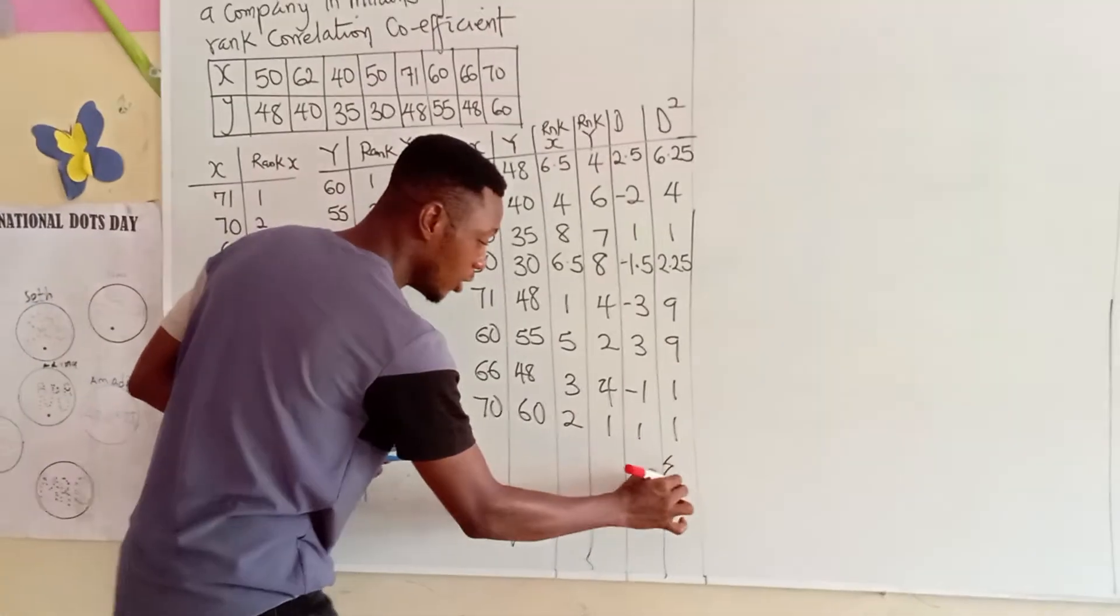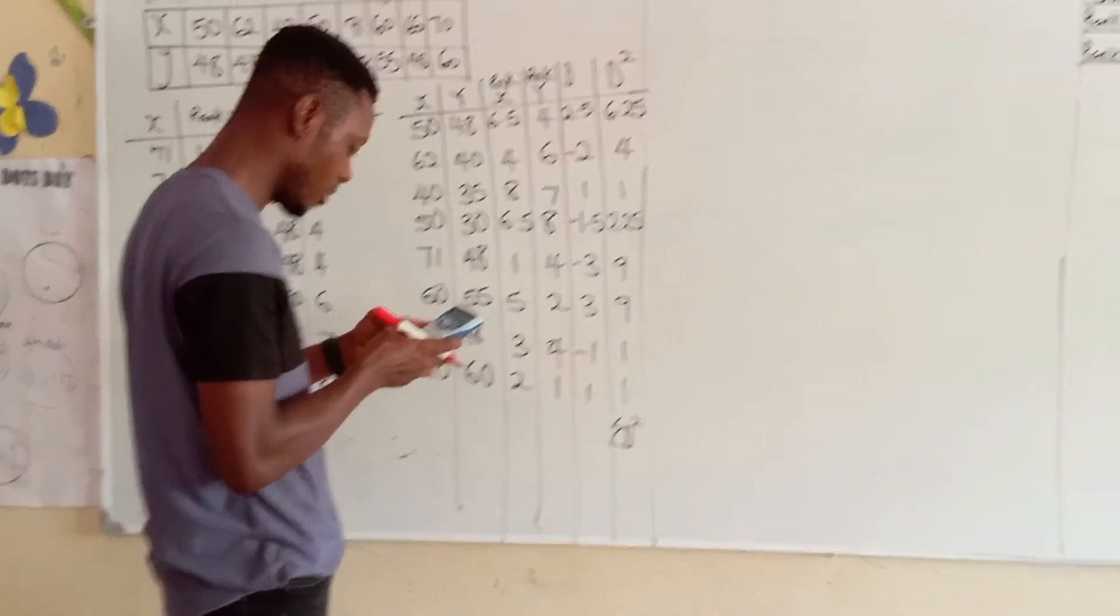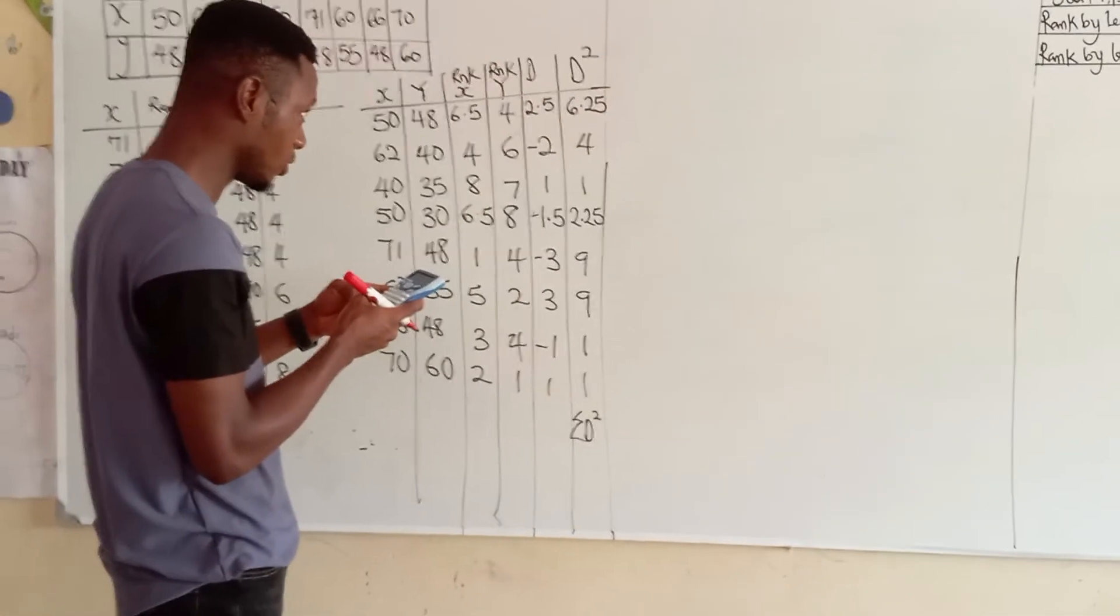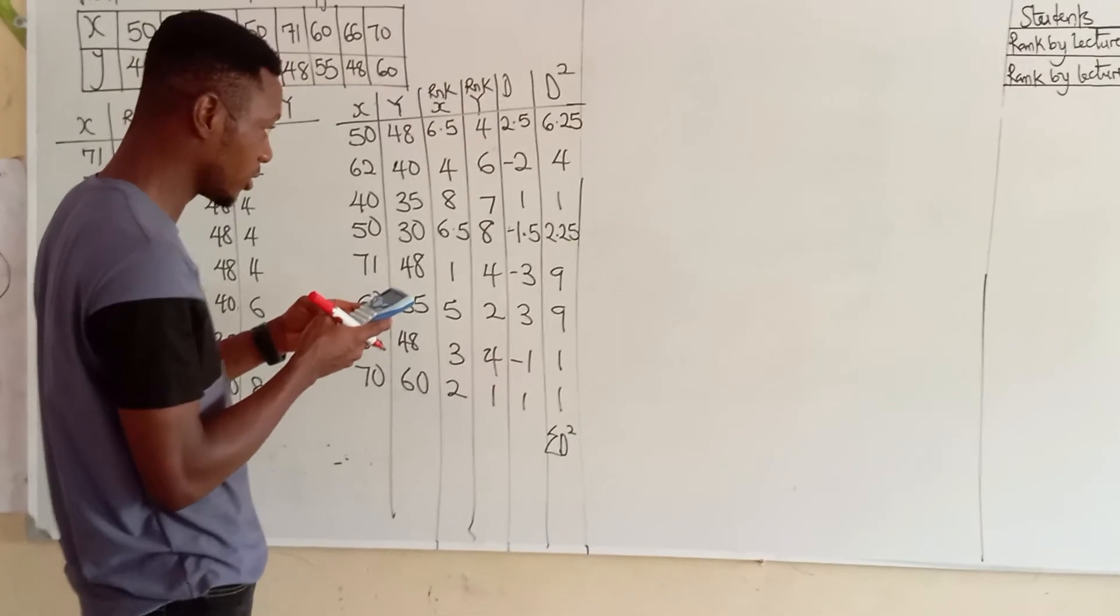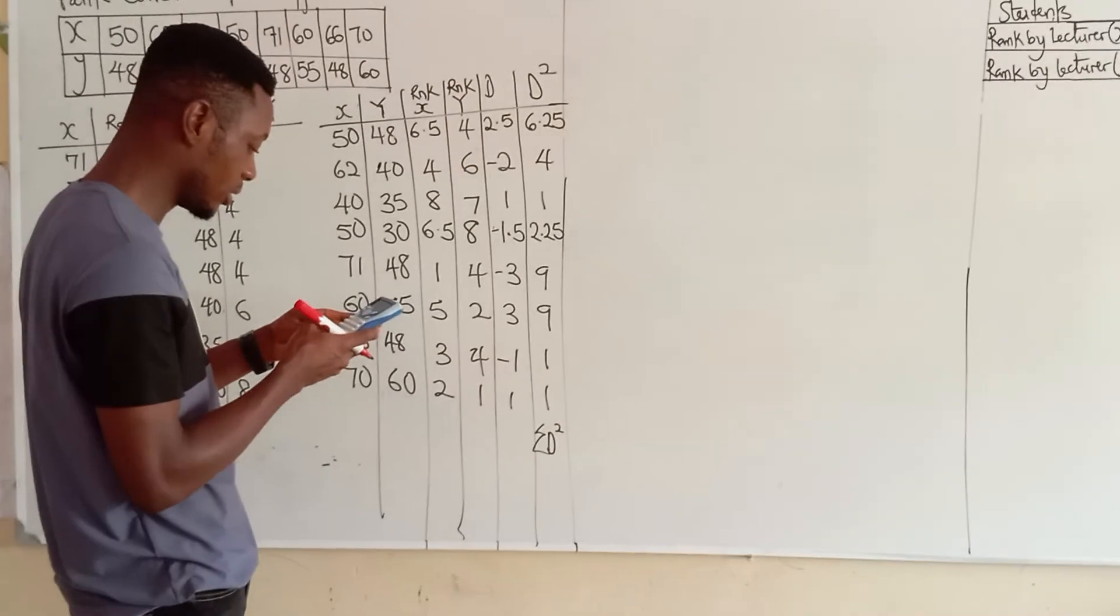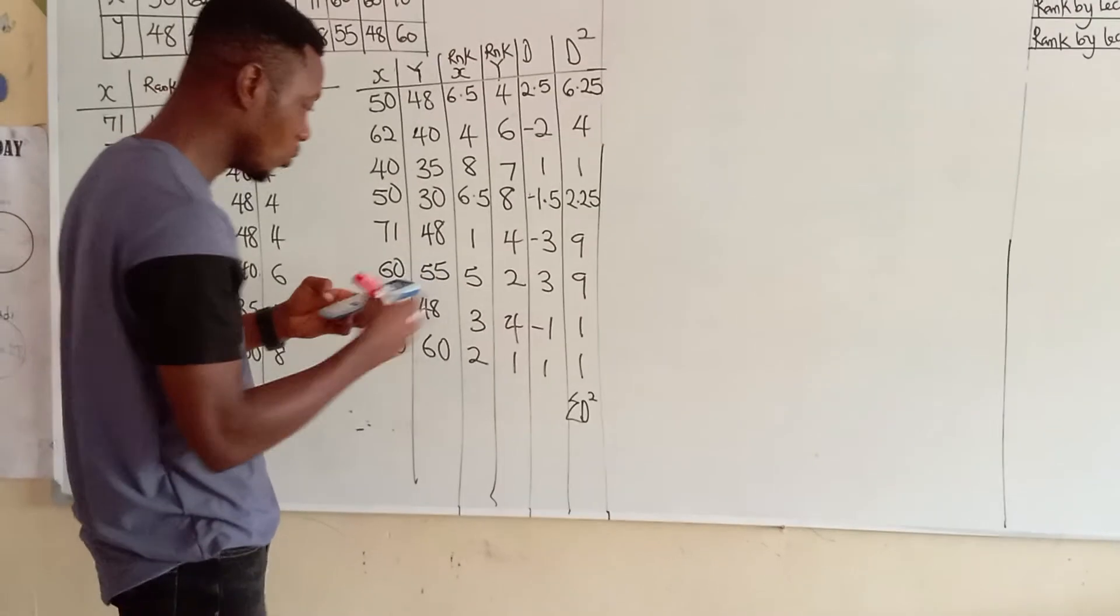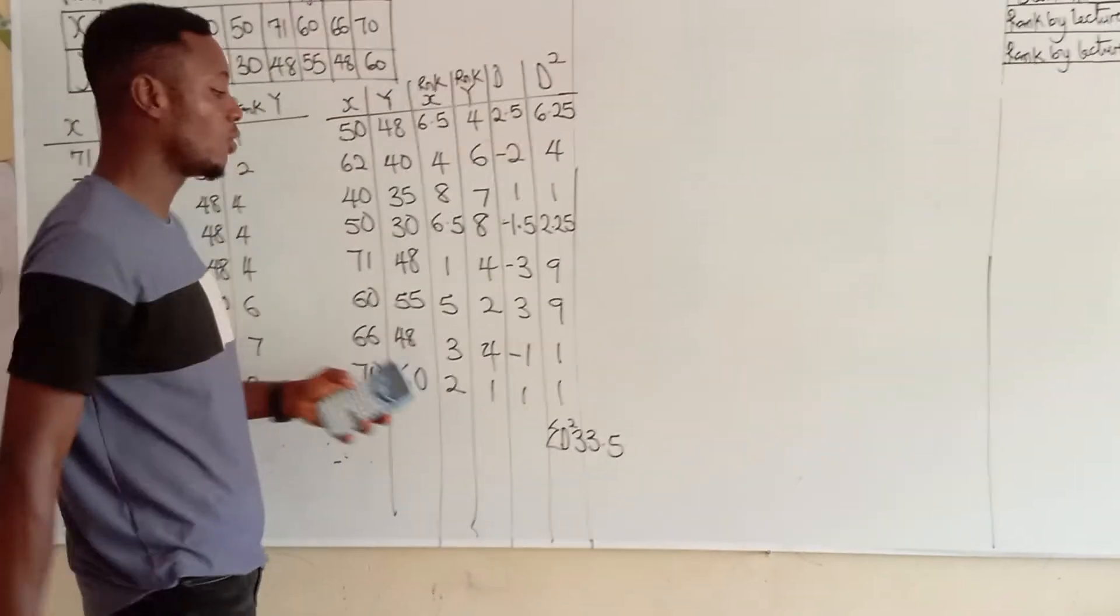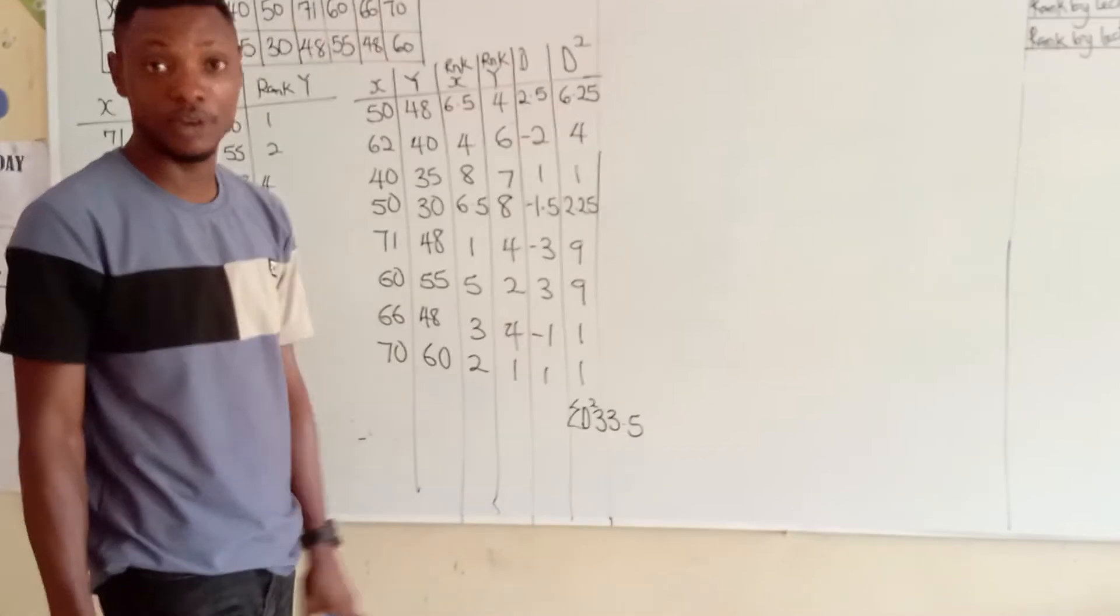Okay. Now, we are going to sum all of this square together. So, summation of this square will give me, we have 6.25 plus 4 plus 1 plus 2.25 plus 9 plus 9 plus 1 plus 1, which gives us 33.5. Now, we've got the summation of all sigma D square, which is 33.5.